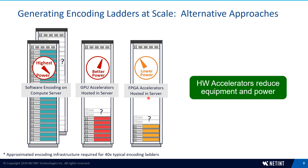The alternatives are to use hardware acceleration for your encoding ladder generation using graphical processor units or FPGAs. With these approaches you can see that you're reducing your equipment count and also lowering your power consumption.